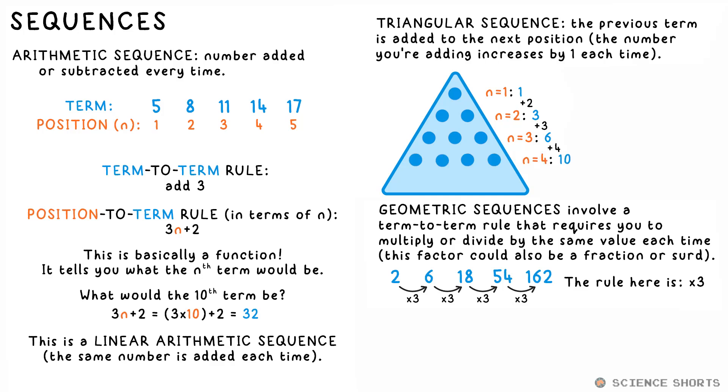Fourth term, we add four, that gives us 10. Next term, we add five, which gives us 15, etc. The nth term is given by n times n plus one, all over two.